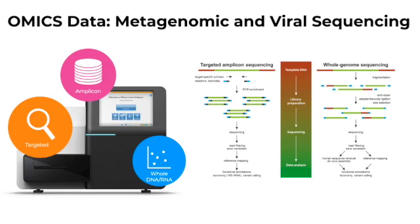as well as shotgun metagenomic sequencing of hypervariable regions such as the 16S ribosomal RNA gene in bacteria. These methods allow us to study individual pathogens or whole microbial communities in their native composition to understand how they can characterize diseases and their spread.